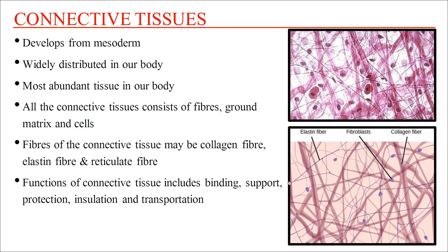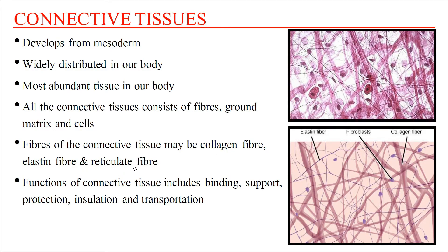Connective tissues develop from mesoderm. They are widely distributed and are the most abundant tissues in our body. All connective tissue consists of three components: fibers, ground matrix, and cells. There are three types of fibers: collagen fibers, elastin fibers, and reticular fibers.